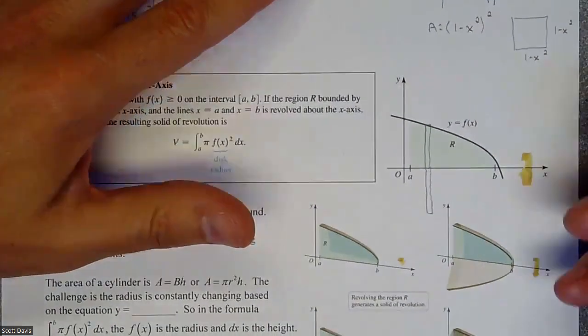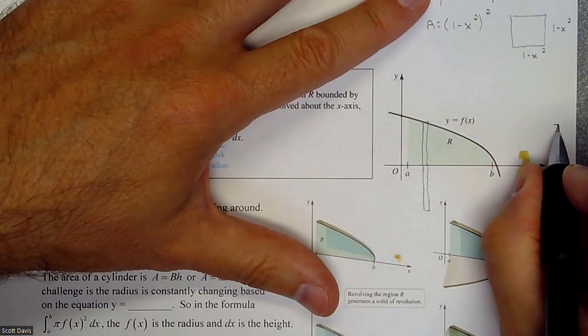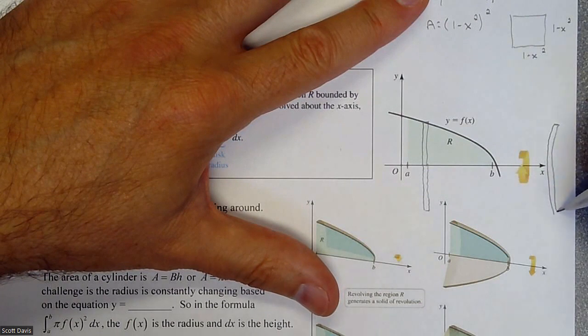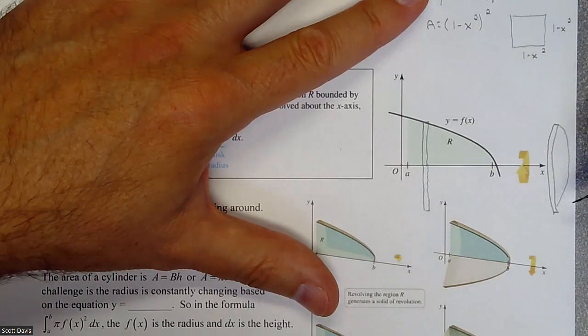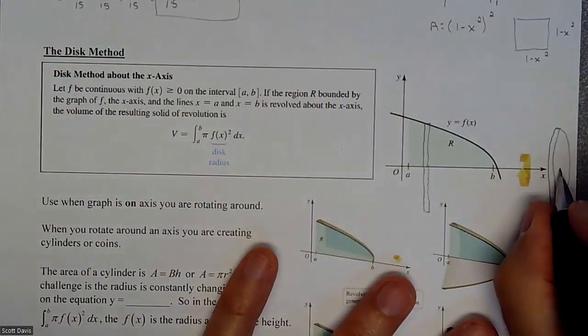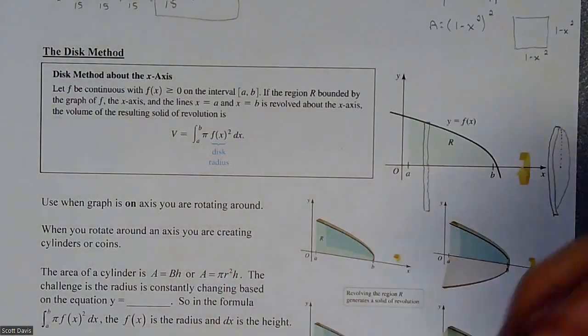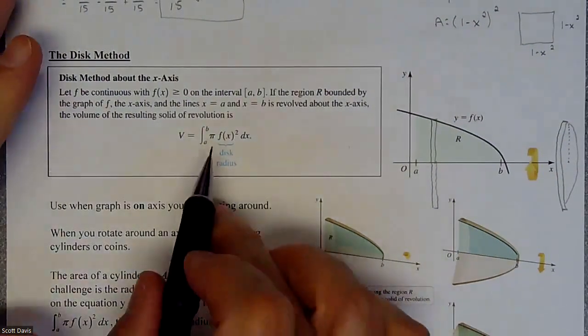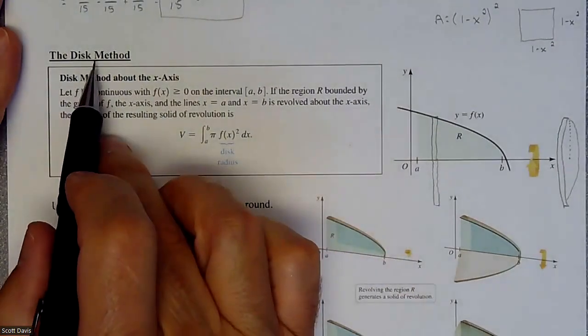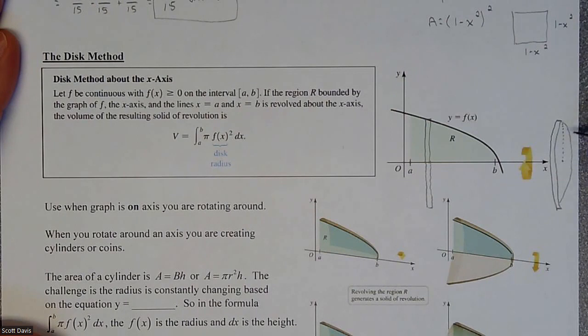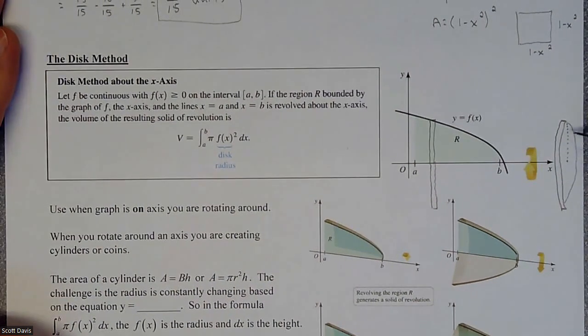But what you're creating in the process is a cylinder, something like that. This height right here is the piece that you need. This formula is called the disk method because you're creating these disks, these coins, which means you're creating cylinders and we need to figure out what the volume of these cylinders are.